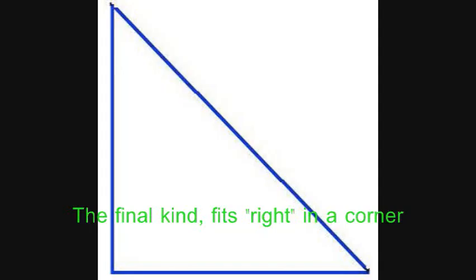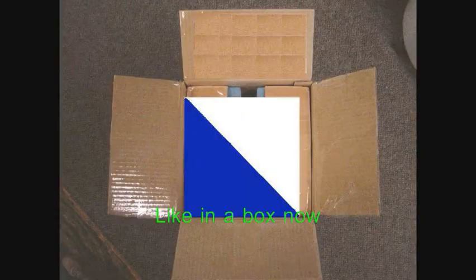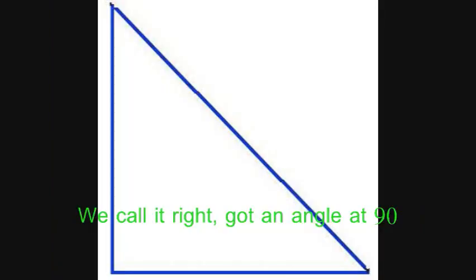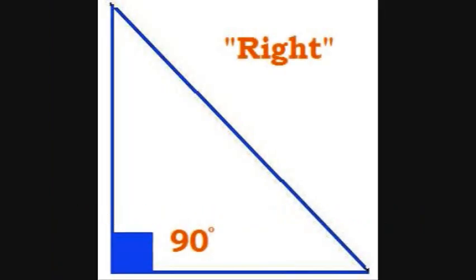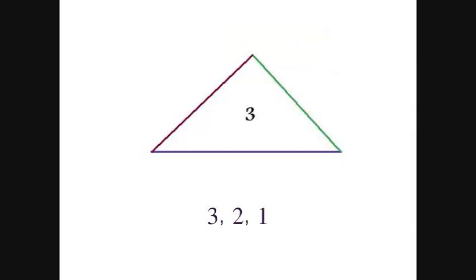Got one big angle — the final kind — fits right in a corner, like in a box now. We call it right, got an angle at 90, it's easy to find.